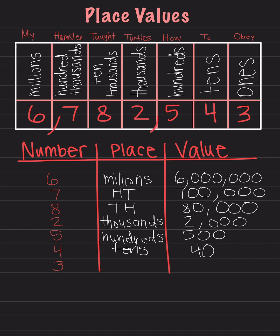Lastly, we have the number 3. It is in the ones place. The value of this 3 is just 3 — there is no number after the 3 for us to replace with a zero, so the value is just 3. And this is how we figure out the place values for numbers based on looking at a place value chart.